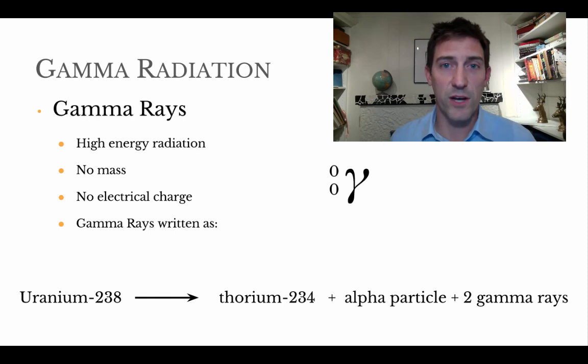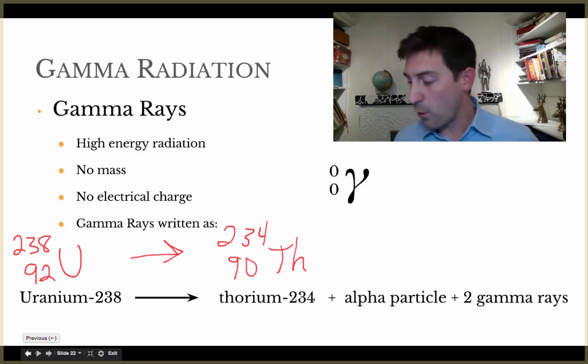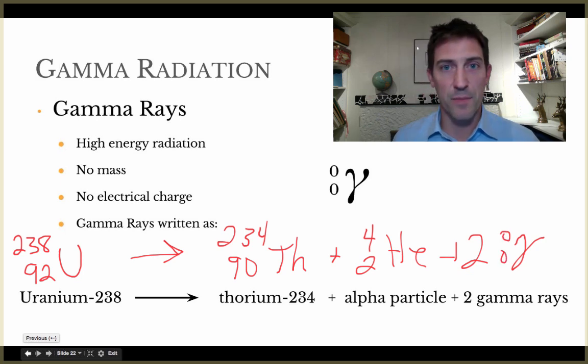Now in a radioactive equation like this, somebody would have to tell you that gamma particles were given off because there's no way to calculate it mathematically, at least not with the skills that we have just yet. I've put the uranium-238 and it's going to decay into thorium-234. As it does that, it's going to release an alpha particle. We already learned what that looks like. And then it's going to release two gamma rays from that.